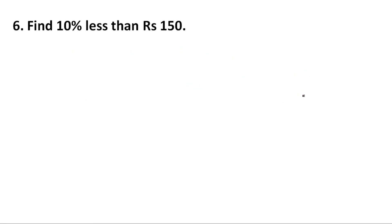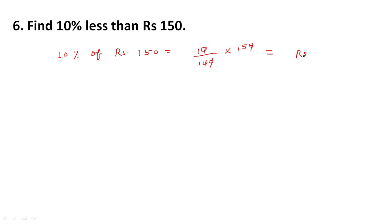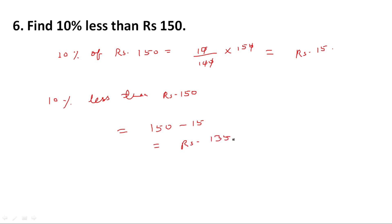Next question: find 10 percent less than rupees 150. First we calculate 10 percent of rupees 150, which equals 10 upon 100 multiplied by 150, with the zeros cancelling, giving rupees 15. Since it is 10 percent less than rupees 150, we subtract: 150 minus 15 equals rupees 135.